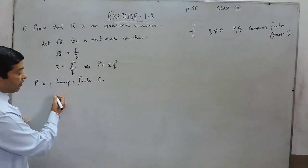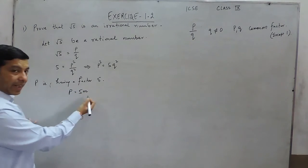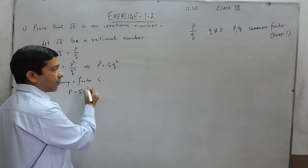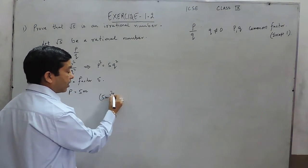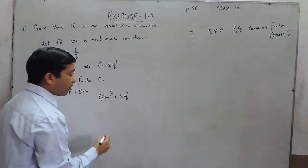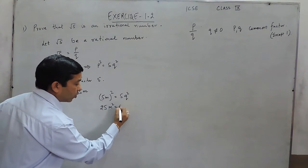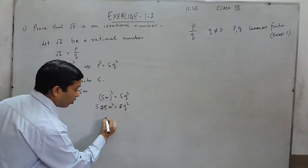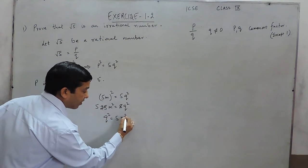Now, what we can do is put the value of P as 5M, taking another variable. So when we substitute the value of P as 5M in this equation, it becomes (5M)² is equal to 5Q². Further solving, it is 25M² is equal to 5Q². When we cancel it out, we can say Q² is equal to 5M².